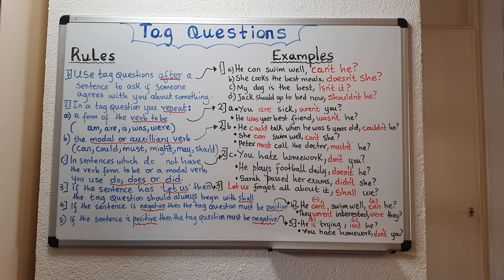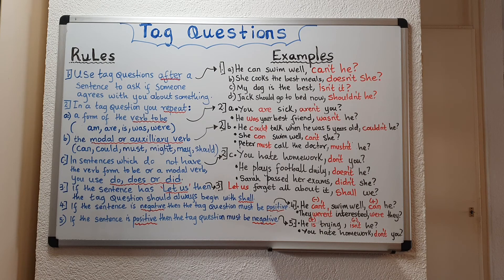Rule number five: if the sentence is positive, then the tag question must be negative. For example: 'He is trying. Isn't he?' — 'is' is positive, so the tag question must begin with the negative 'isn't' — that is, 'is' plus N-apostrophe-T. Positive and negative — one of them always has to be positive and the other negative.